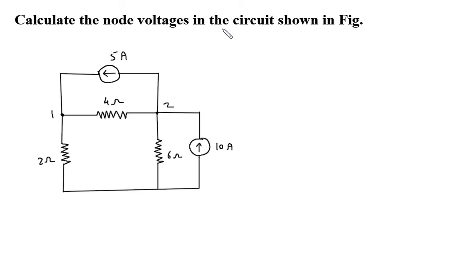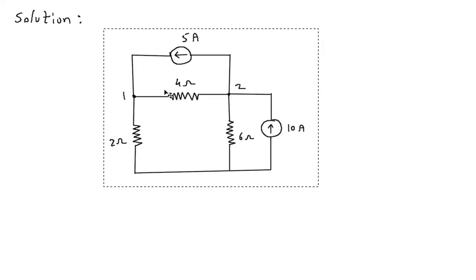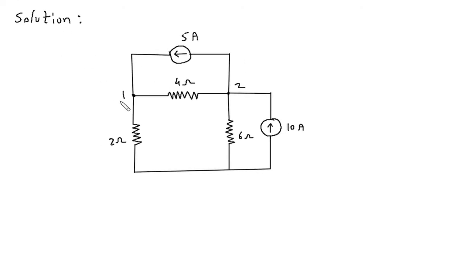Calculate the node voltages in the circuit shown in the figure. This is node 1 and this is node 2. We have to find the voltage of node 1 and voltage of node 2. First of all we will redraw the circuit. Let us say this node 1 voltage is V1 and this node 2 voltage is V2.